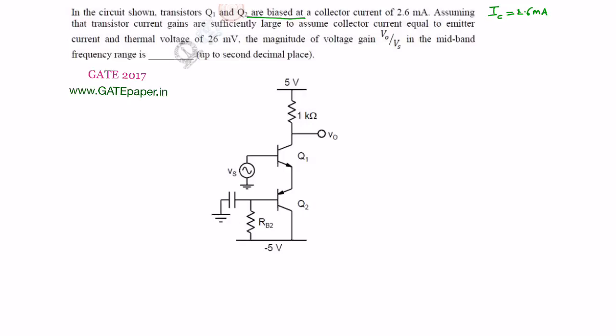The definition of biasing is: biasing is mainly used to keep the transistor in one of the regions — active region, saturation region, or cut-off region — with the help of DC voltage sources along with resistors. Biased collector current means DC collector current, capital IC, is 2.6 mA. Assume that transistor current gains are sufficiently large so that collector current equals emitter current. Thermal voltage VT is 26 mV.